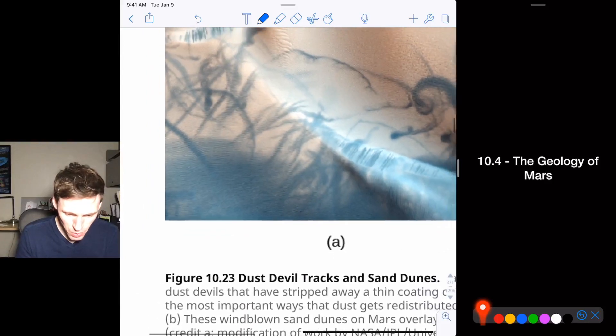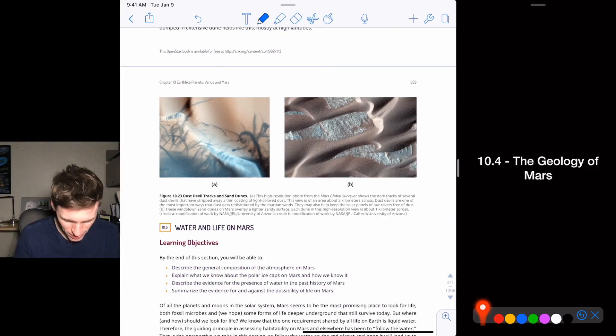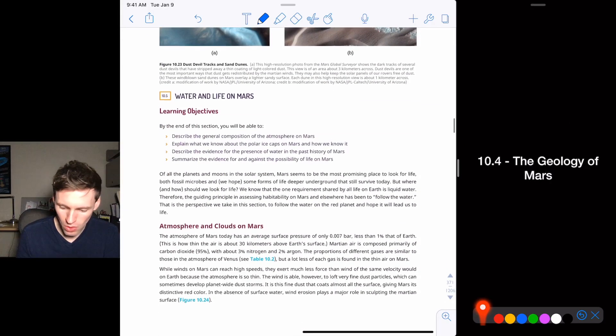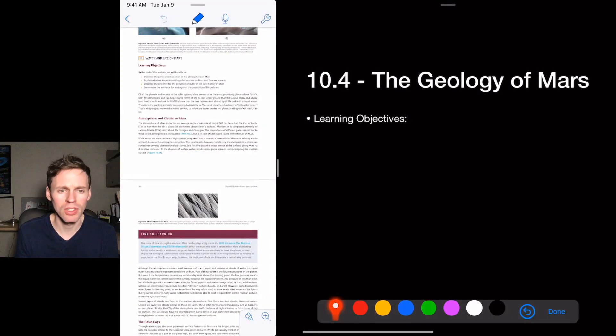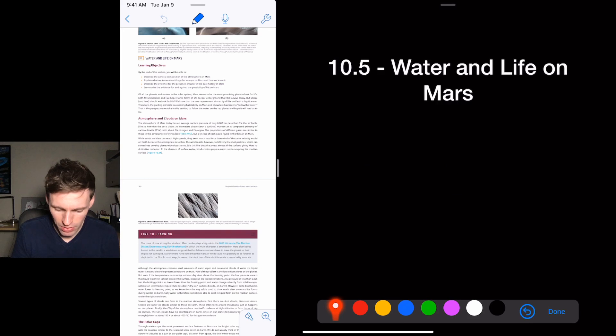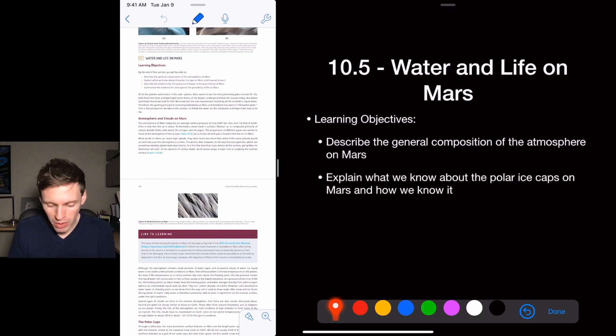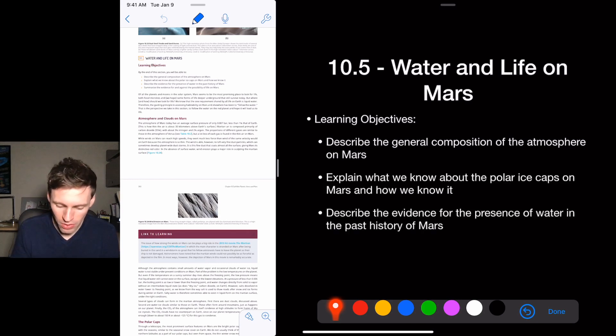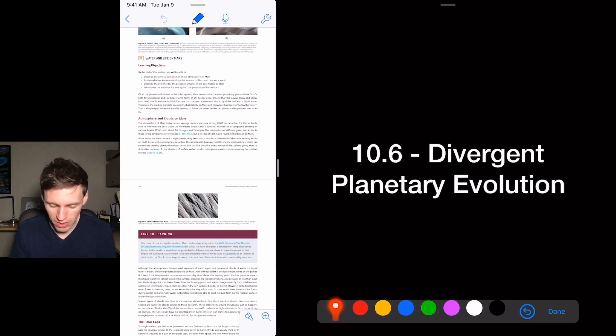Okay. So again, I can't, I'm not really going to quiz you on a lot of this stuff. It's just general kind of information to contextualize planetary science. So we want to discuss the main mission, didn't I just do that? This one. Okay. So we want to describe the general composition of the atmosphere of Mars. We want to explain what we know about the ice caps and how we know it, and describe the evidence for the presence of water in the past history of Mars, and then summarize the evidence for and against the possibility of life on Mars.